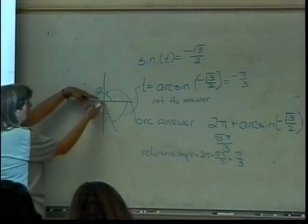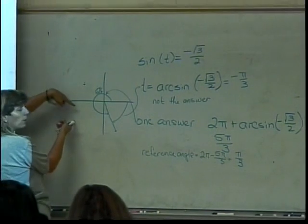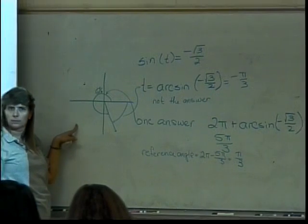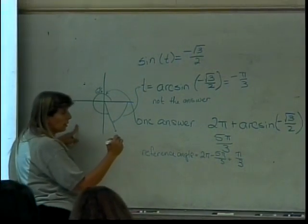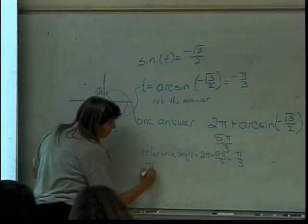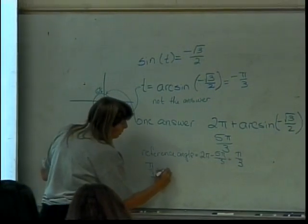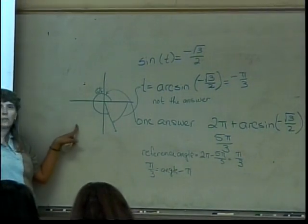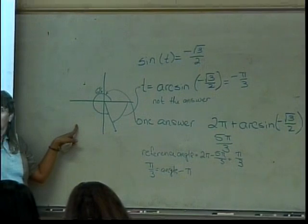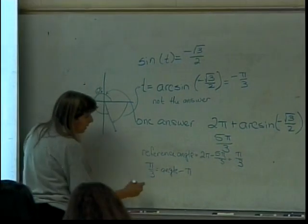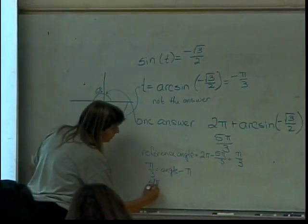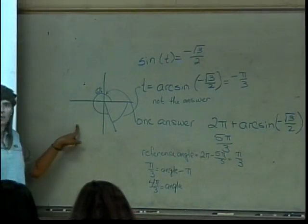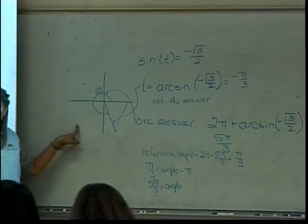Now, let's say I wanted to put that same reference angle over here. How did I find reference angles in quadrant 3? Angle minus π. So, reference angle is π over 3. That's equal to my angle minus π. What can I do to find my angle? Add π to both sides. So, I'll get 4π over 3 is equal to my angle.